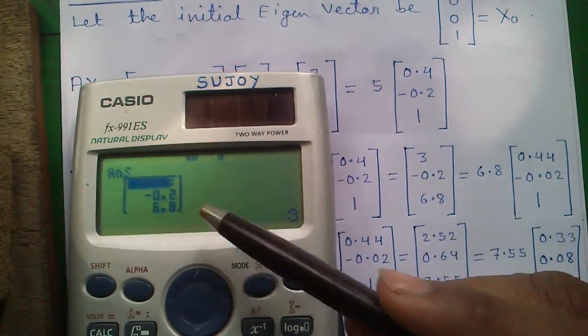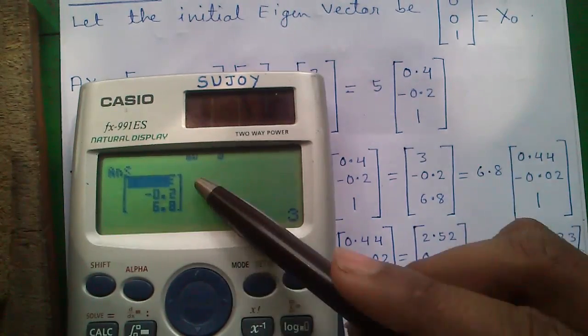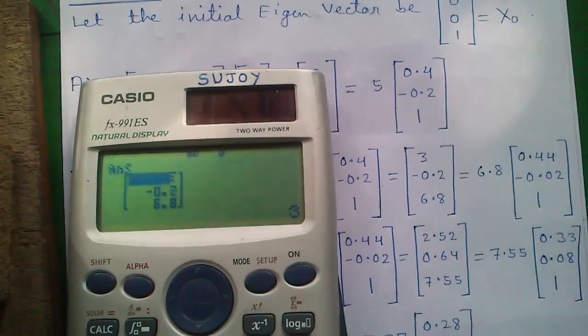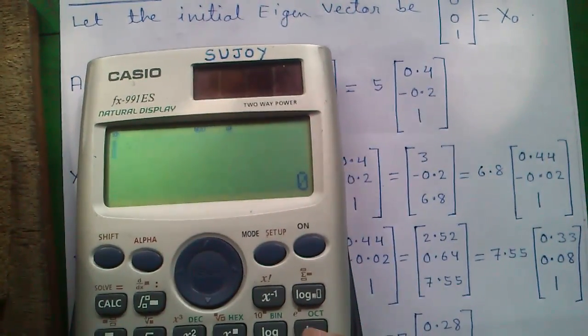Now we will divide our answer matrix by 6.8. Press shift 4 for matrix, 5 for answer, divided by 6.8, and press equals.